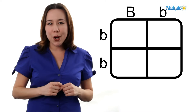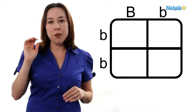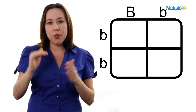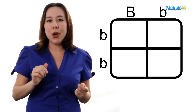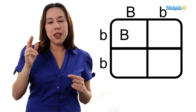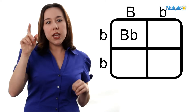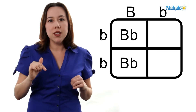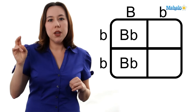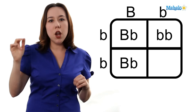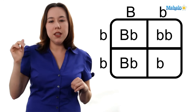Alrighty, it's time to do our cross. We're going to take one from the top and one from the left, and bring them down into those squares. We have on our top big B, little b. Bring another big B, little b down. In our right square at the top, we have little b, little b. And our bottom right square, we have little b, little b.